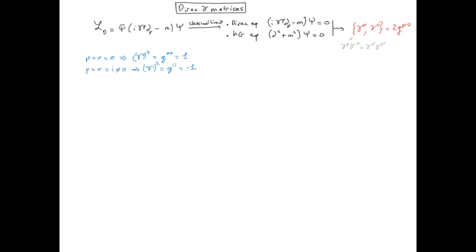And when mu is not equal to nu, then g mu nu is zero. The first two conditions could be fulfilled if gamma were just numbers. However, this is not true for the last condition.